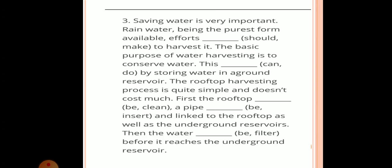The third example is about saving water. Saving water is very important, especially rain water, being the purest form available. Efforts should be made to harvest it. The basic purpose of water harvesting is to conserve water, and this could be done by storing water in a ground reservoir. The rooftop harvesting process is quite simple and does not cost much. First the rooftop was cleaned, a pipe was inserted and linked to the rooftop as well as the underground reservoir.